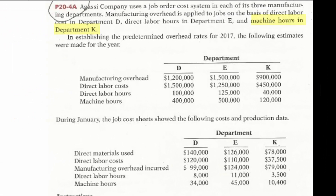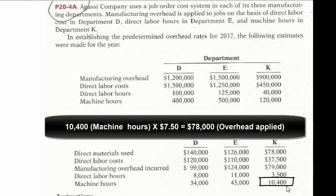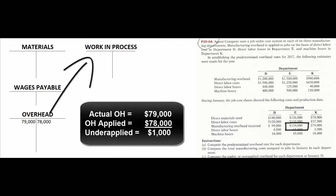Department K is more mechanized, so machine hours — the hours their machines run during the month — are a good driver of overhead costs. At the beginning of the year: total estimated annual overhead of $900,000 divided by 120,000 machine hours equals $7.50 per machine hour. During January they use 10,400 machine hours, so they apply $78,000 of overhead. Actual overhead incurred was $79,000, making it $1,000 under-applied for January.